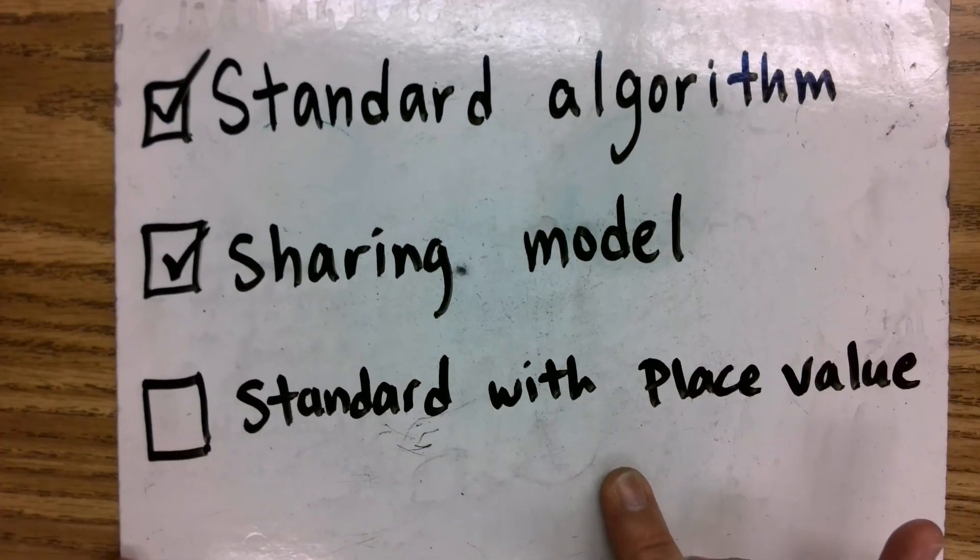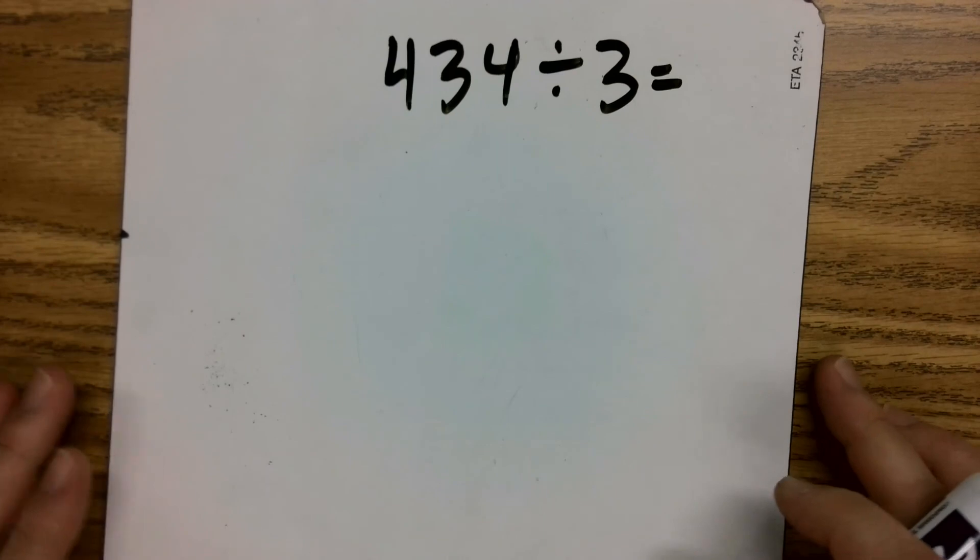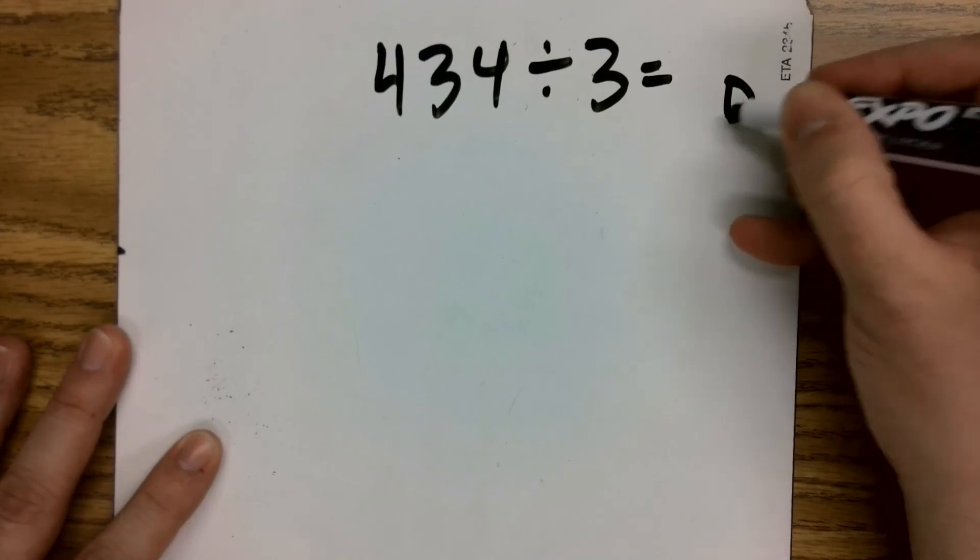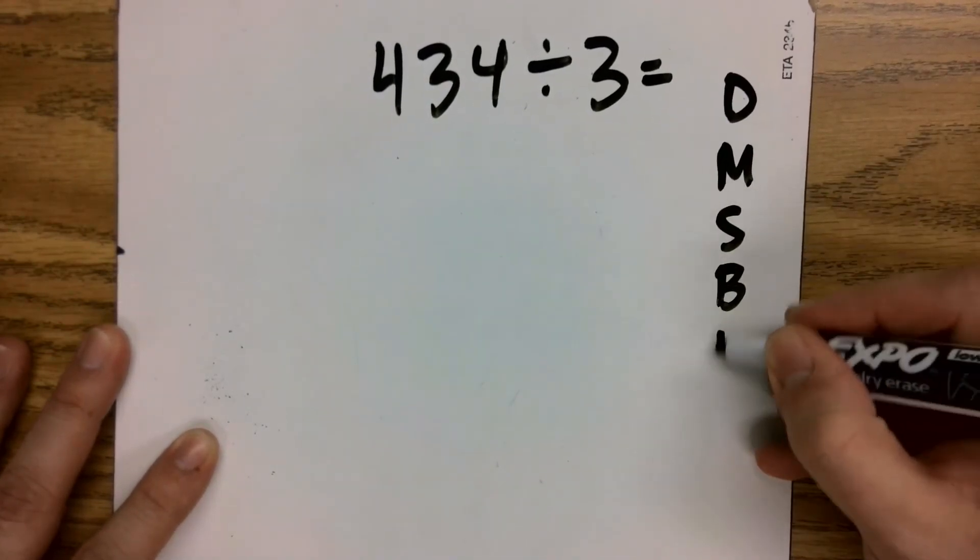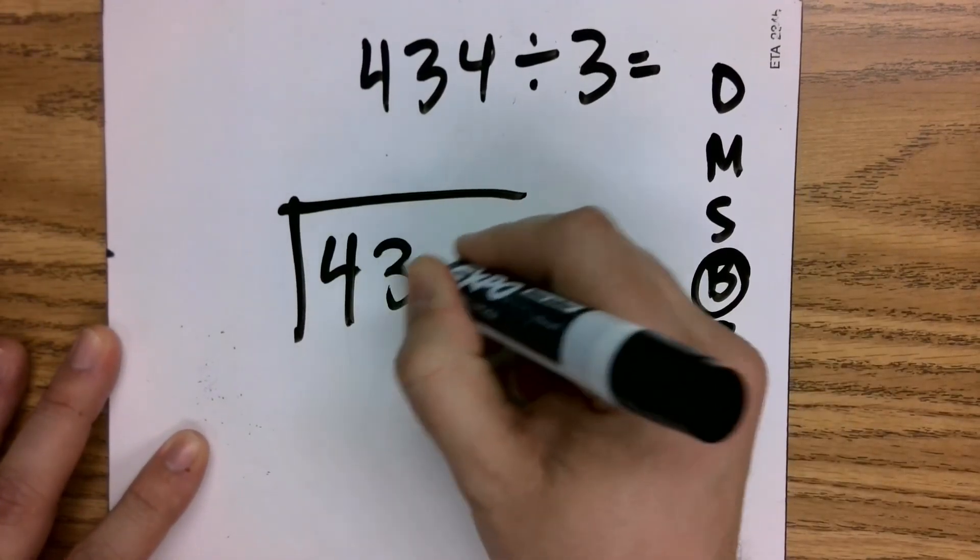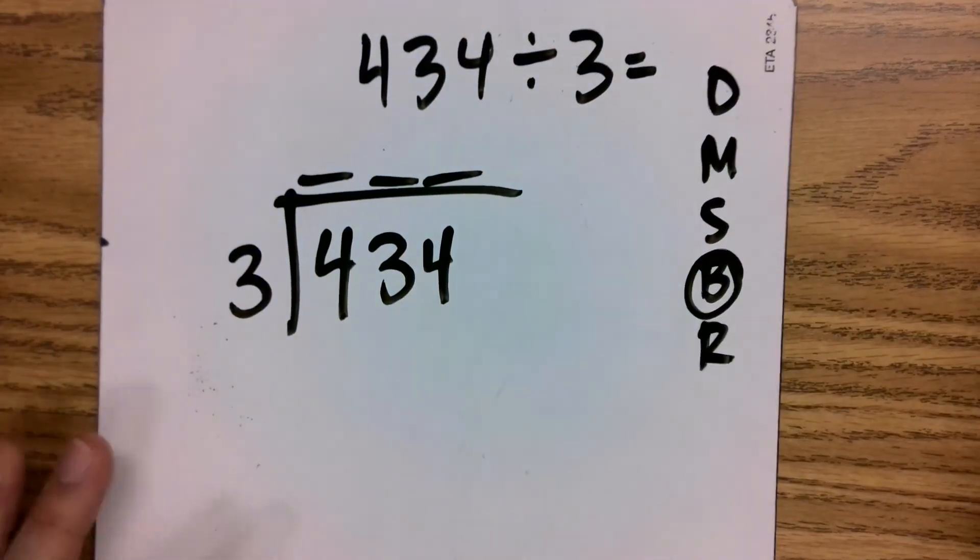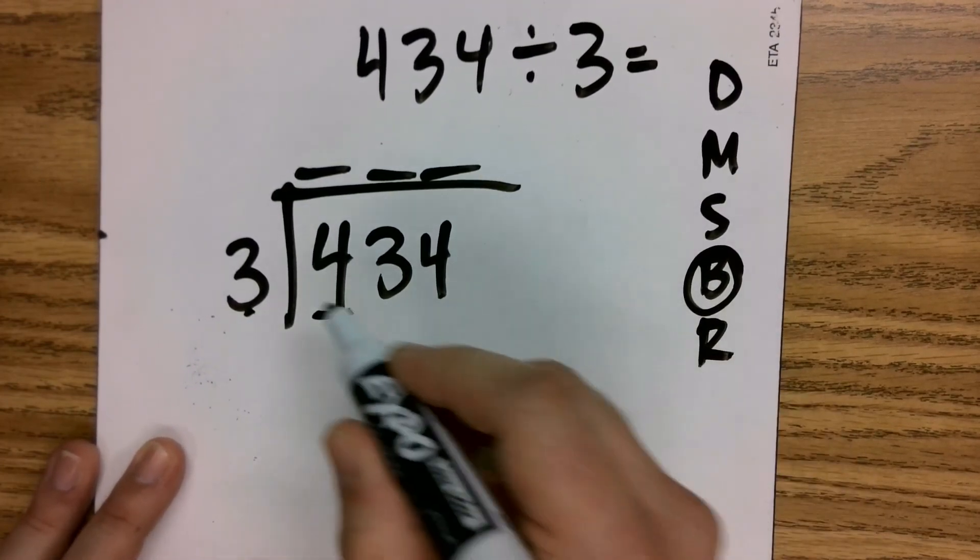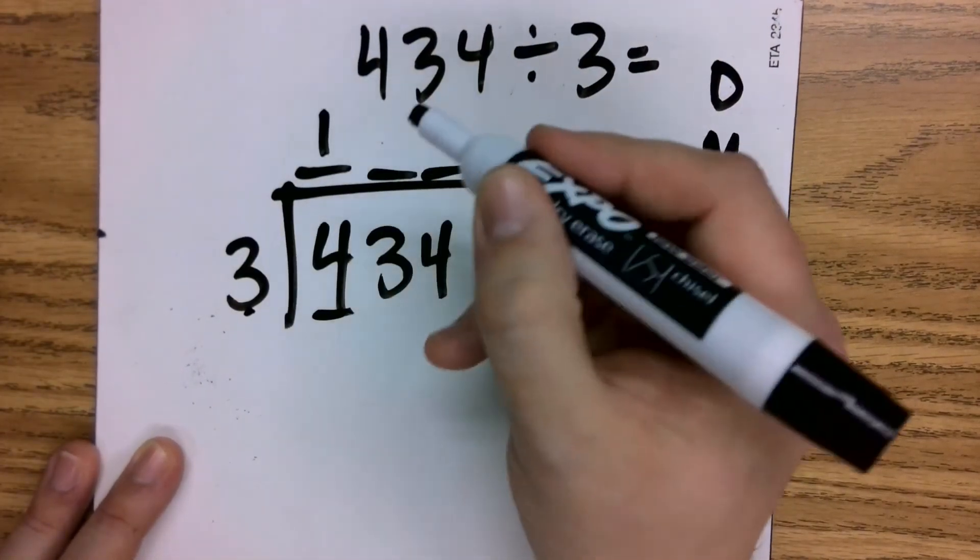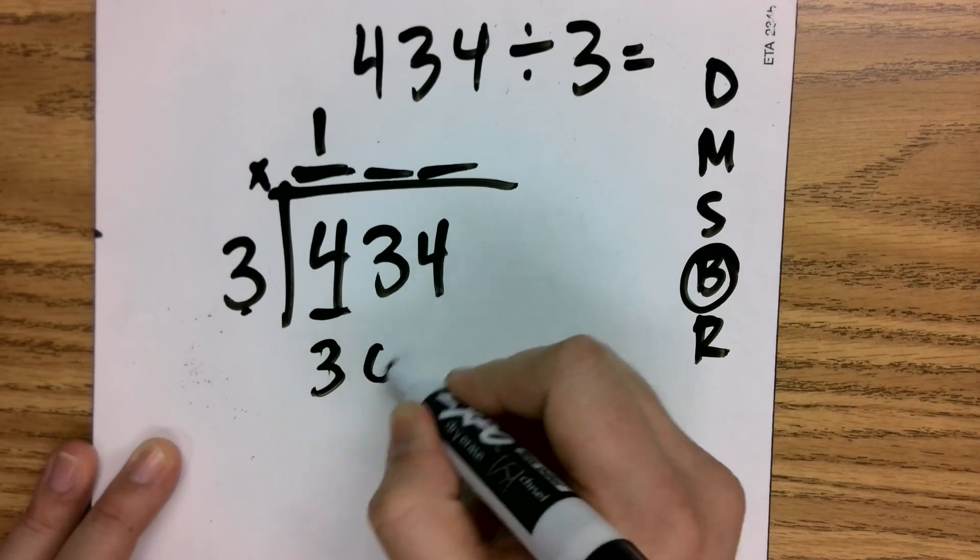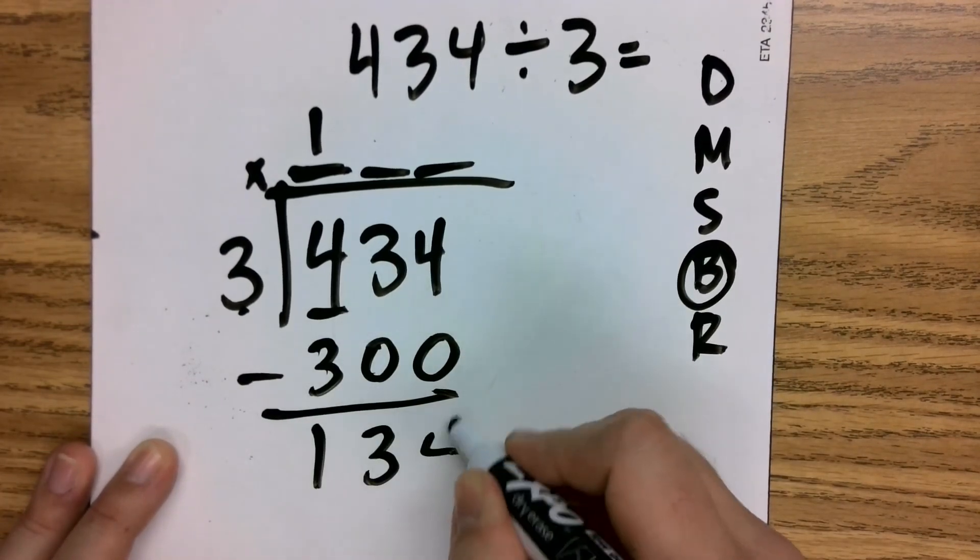Now I'd like to do the standard with place value, which I think will be helpful to see because this is really what we're doing when we're doing the standard model. It's just the bring down step is going to be changed slightly. You'll see what I mean, but it looks like the standard algorithm: 434 divided by 3. We'll bring those dashes up. Once again, I'm going to do this the same way, but 3 goes into 400 one time, right? And I know I'm going to say 100 because it's a 1 in the hundreds place times 3 is 300. When I subtract this, I'm left with 134.